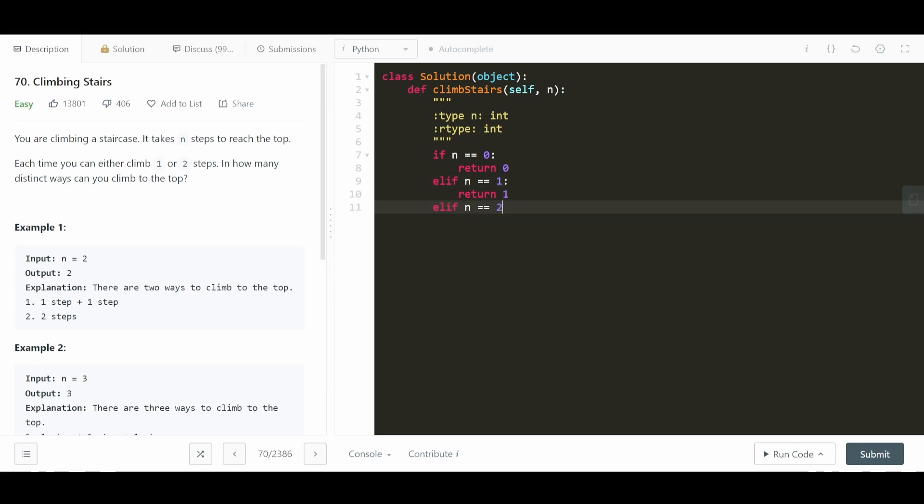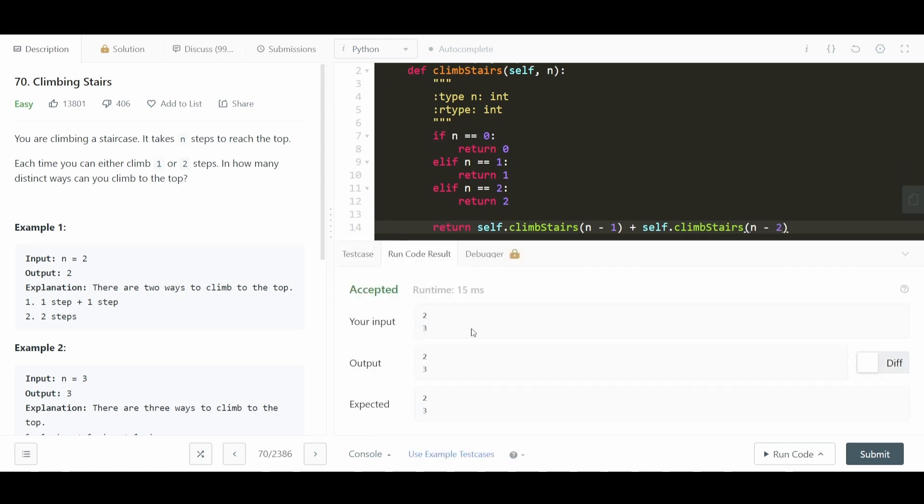Else, if n equals two, we return two. Now we return self climb stairs at n minus one, plus self climb stairs at n minus two. And we can see that this works. However, for a large input, it's going to be very slow.